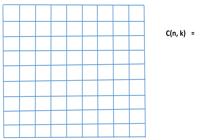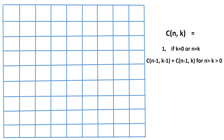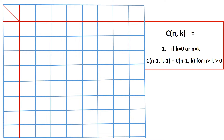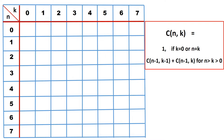Let us consider an example of computing the binomial coefficient. The formula is: C(n, k) equals 1 if k equals 0 or n equals k; otherwise it is C(n−1, k−1) plus C(n−1, k). We shall take this formula and build a table with rows indexed by n and columns indexed by k. k goes from 0 to 7 and n goes from 0 to 7. According to the formula, when k equals 0 the value should be 1, so we fill that entire column with 1.